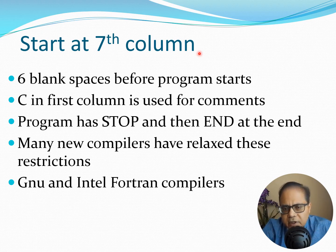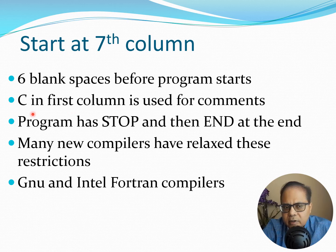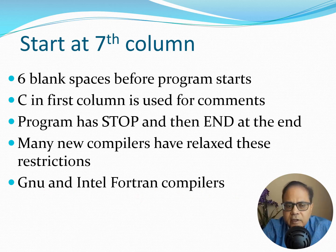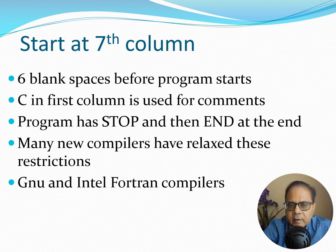Some important formatting rules in Fortran: the first six columns are left blank — the program starts at the seventh column. A 'C' in the first column marks a comment line, which is sometimes replaced by an exclamation mark in newer compilers, though C is the classical way. The program typically ends with a stop and end statement. Many newer compilers have relaxed these restrictions. Popular compilers include the GNU Fortran compiler and the Intel Fortran compiler, both of which you can download — GNU is certainly free.